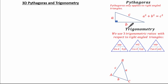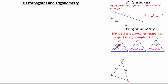It's also important to have knowledge on Trigonometry, using the three trig ratios with respect to right-angled triangles. The trig ratio associated with sin is: sin theta equals opposite over hypotenuse, cos theta equals adjacent over hypotenuse, and tan theta equals opposite over adjacent.